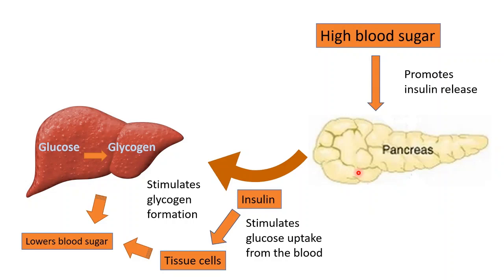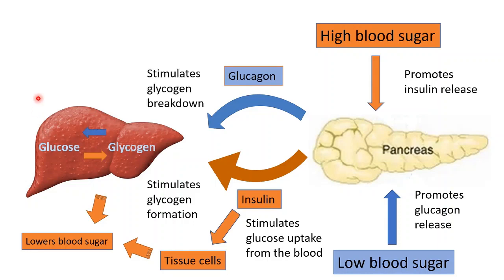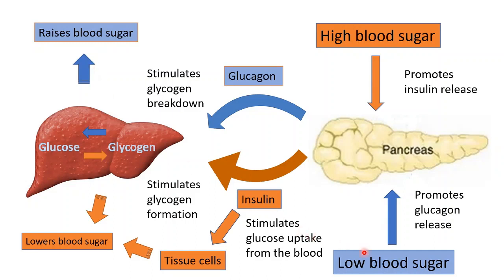On the other hand, if blood sugar is low, this stimulates the pancreas to secrete another peptide hormone called glucagon. Glucagon also targets the liver, but this time it causes the liver to convert glycogen back to glucose and release it into the blood, raising blood sugar levels. Again, the response opposes the stimulus, and this is how homeostasis is maintained by negative feedback.